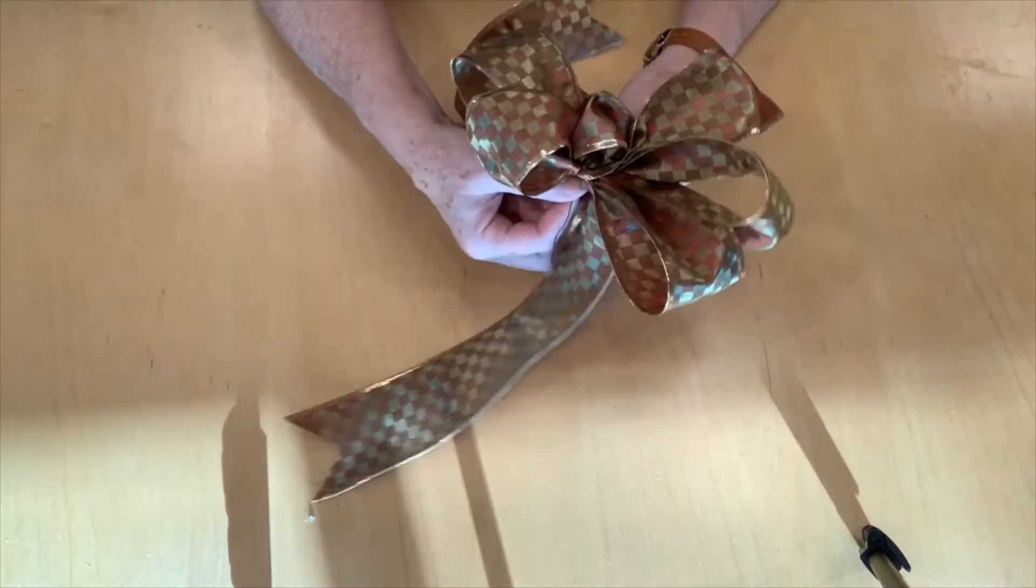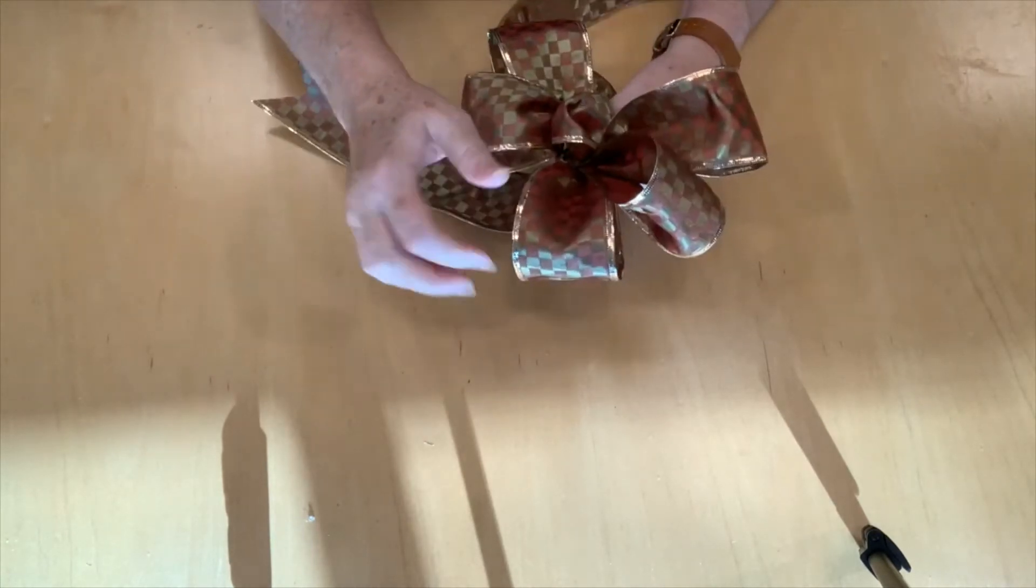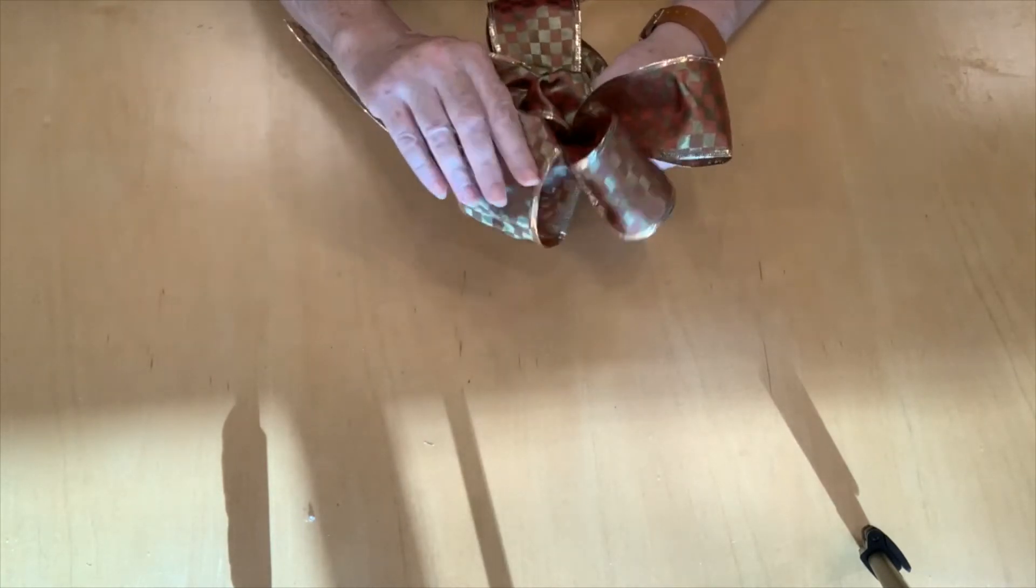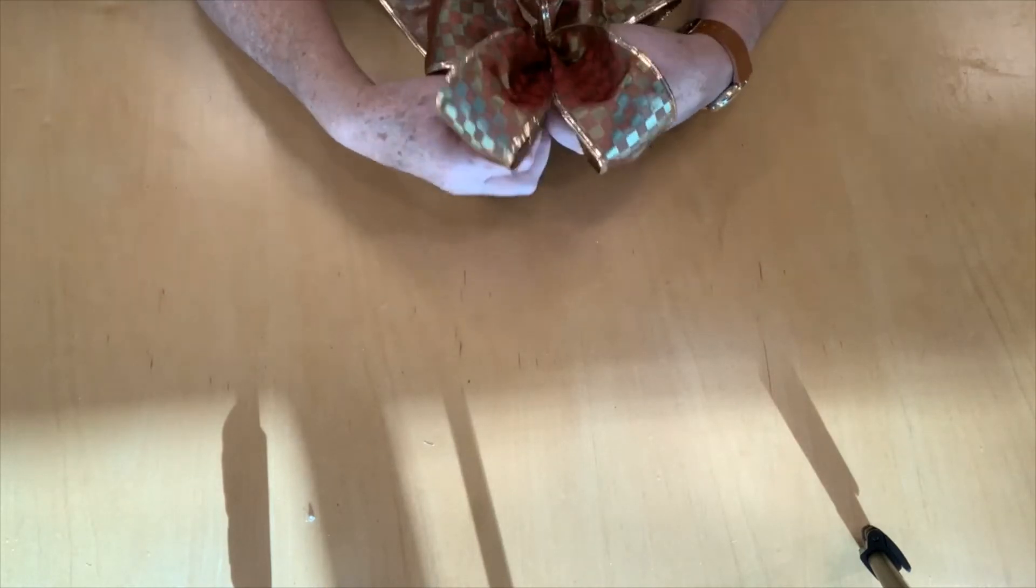And now let's make this bow pretty. And you do that by pulling your ribbon out. And this is why you like to have wire ribbon.